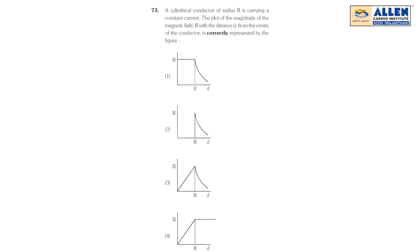A cylindrical conductor of radius R is carrying a constant current. The plot of magnitude of magnetic field B with respect to d from the center of the conductor is correctly represented by?